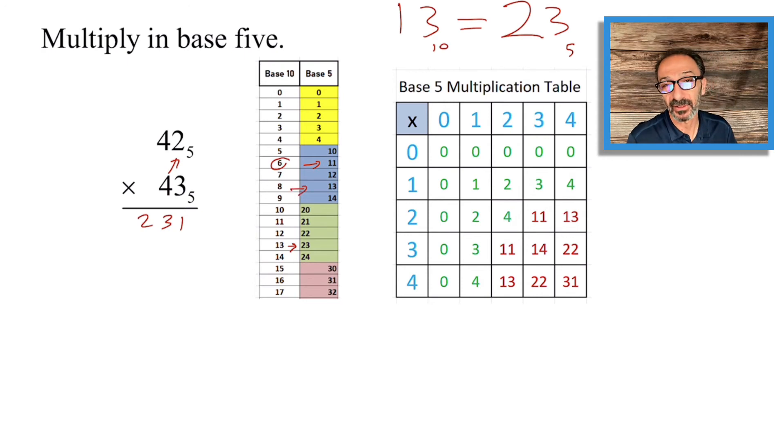You could look at the chart and do it yourself. 8 is one five and three units, which looks like 13. So we're gonna write 3 and carry the one five on top.